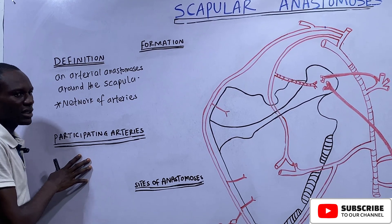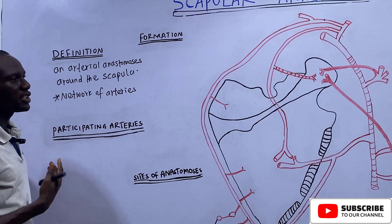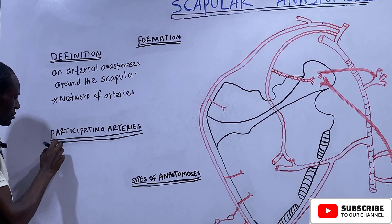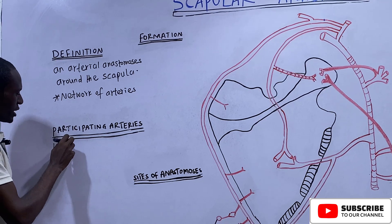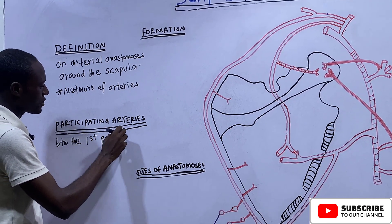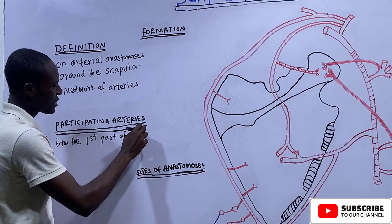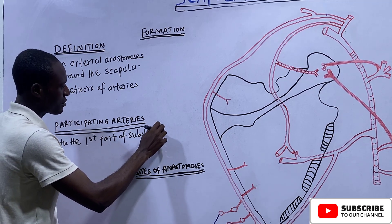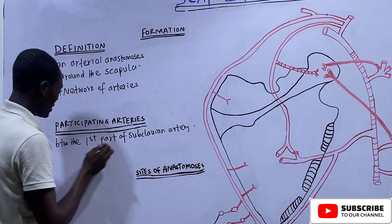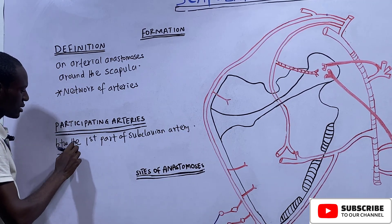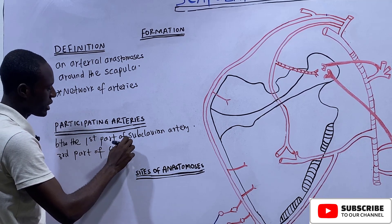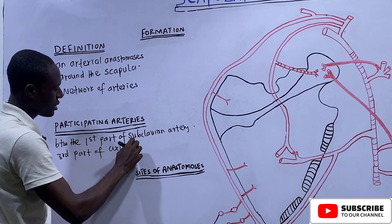So what are the participating arteries? It is very easy to remember the participating arteries. The anastomosis is between the first part of the subclavian artery and the third part of the axillary artery.